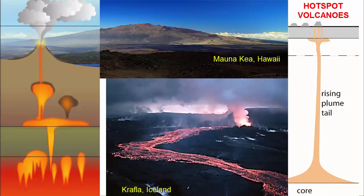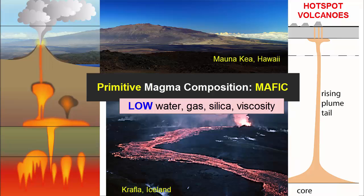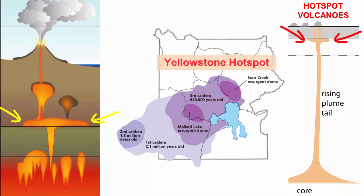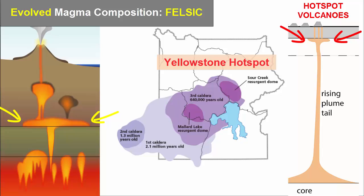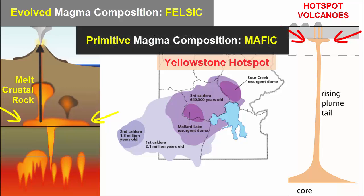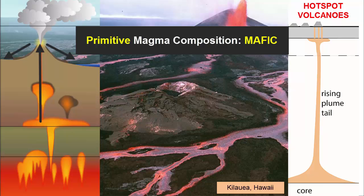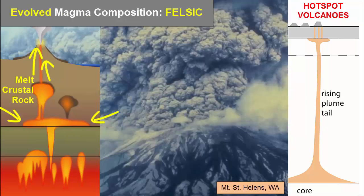When hotspot volcanoes erupt through oceanic or continental crust, because the magma supply is so large and the transit to the surface so quick, they produce mostly low-viscosity mafic lavas. However, where magma supply is lower, such as on the edges of the plume, and they erupt through thicker crust, they can evolve to produce more felsic magmas. Also, if the magma supply is great enough and the chamber underground large enough, the heat from the magma can melt the surrounding crust. This melted crustal material is felsic in composition. In such cases, we can see eruptions of mafic material from the center of the magma chamber and felsic material from the edges of the chamber. In the former, eruptions are fast-moving lava flows spreading quickly and far from the vents. In the latter, there can be large amounts of gas and pressure and highly explosive large-volume ash eruptions.